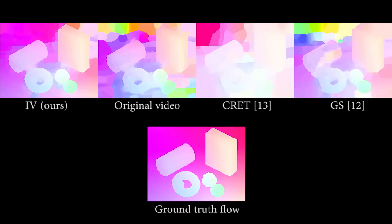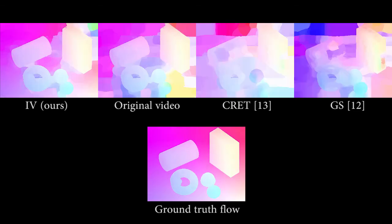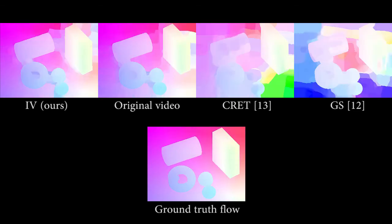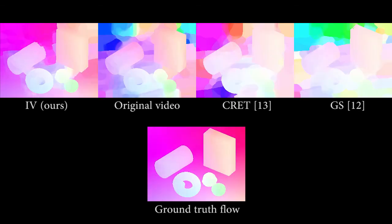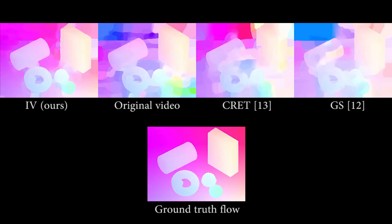In addition, note that the flow computed from our albedo sequence is more accurate than the flow computed from the original images. This suggests that intrinsic video may be useful to improve optical flow estimation.